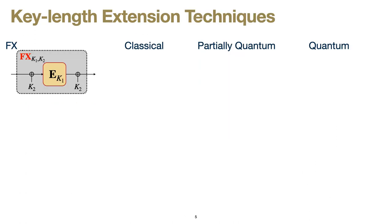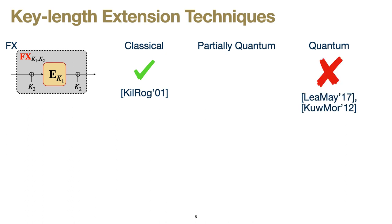Let me give a brief overview of the different techniques we consider in our paper. The first is called FX, which augments a block cipher with an extra key k2 that gets XOR'd into the input and into the output of the block cipher. This was analyzed in the classical setting by Kilian and Rogaway, who showed it was a sound technique for key length extension. However, in the fully quantum setting, clever attacks combining multiple quantum algorithms show that this is actually not a sound key length extension technique — it's no more secure than using E by itself without the extra XOR.